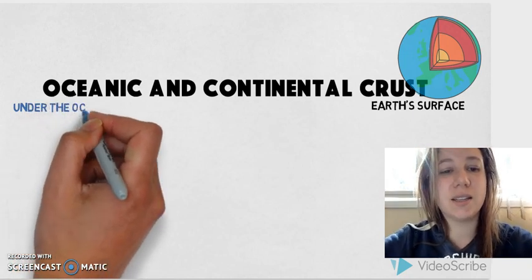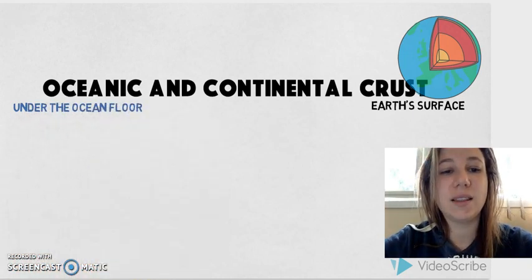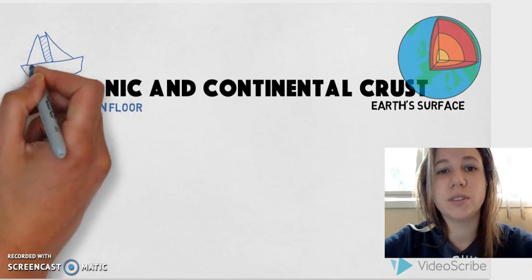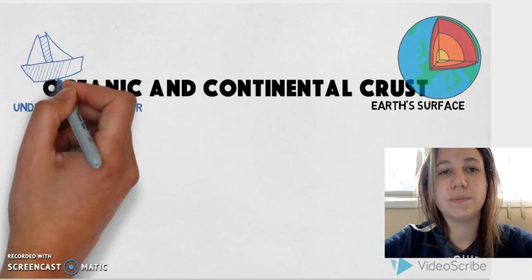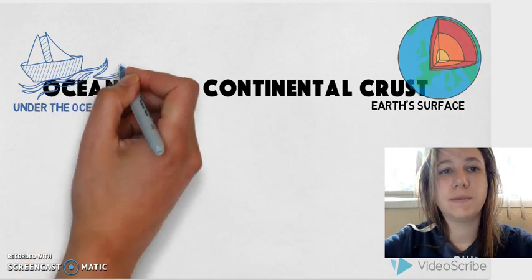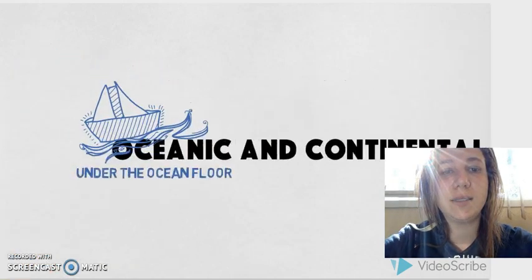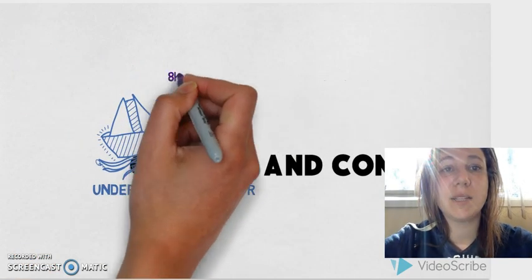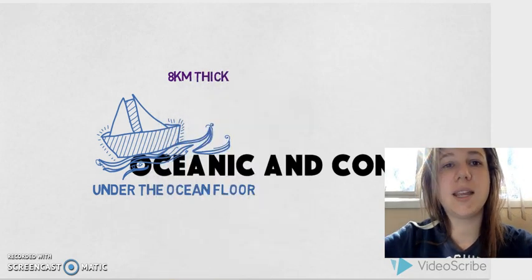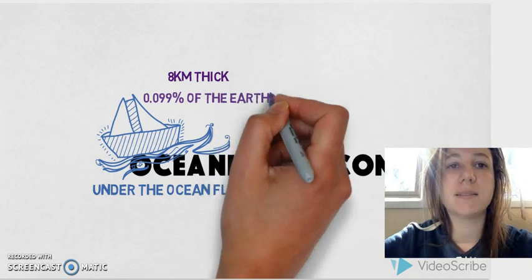If we focus in on the oceanic crust, this is any of the crust that is underneath the ocean floor. The oceanic crust is about 8km in thickness and accounts for 0.099% of the Earth's mass.